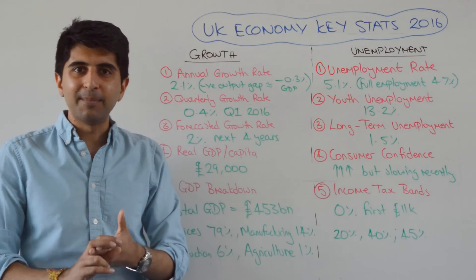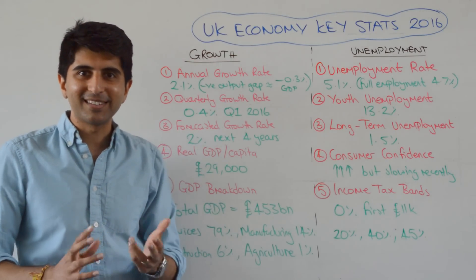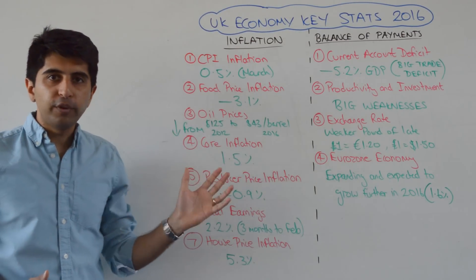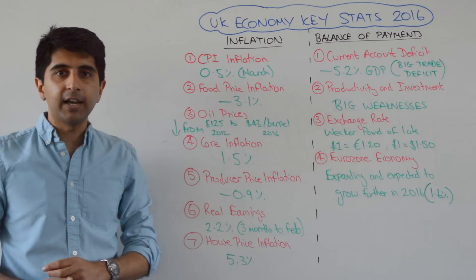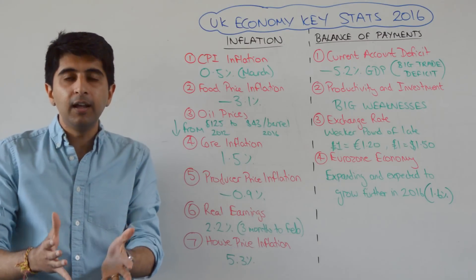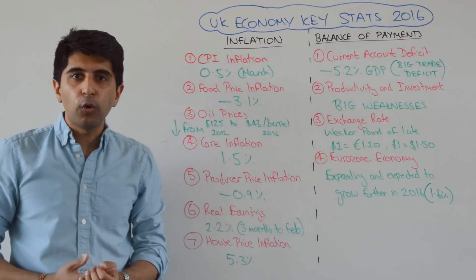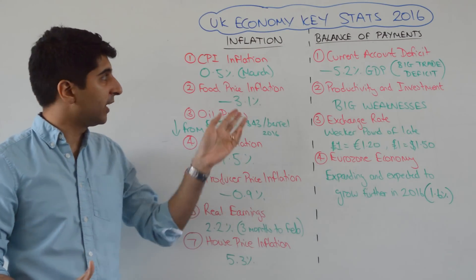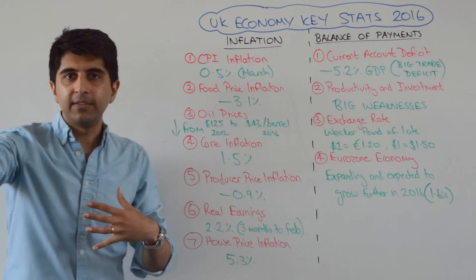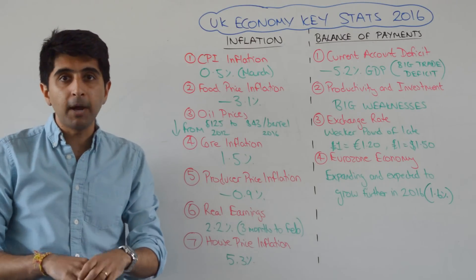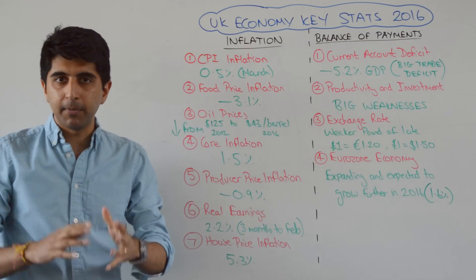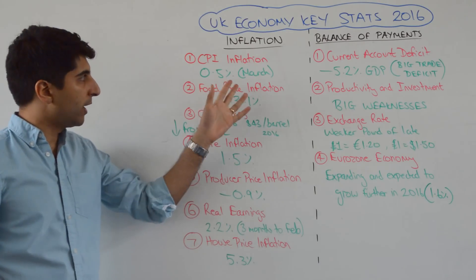Current CPI inflation in the UK is at 0.5% — that's a March figure. By the time you're watching this video, you'll likely have a more up-to-date figure. But whatever it is, it's going to be much, much below what the central bank is targeting — much below the 2% target rate of inflation.